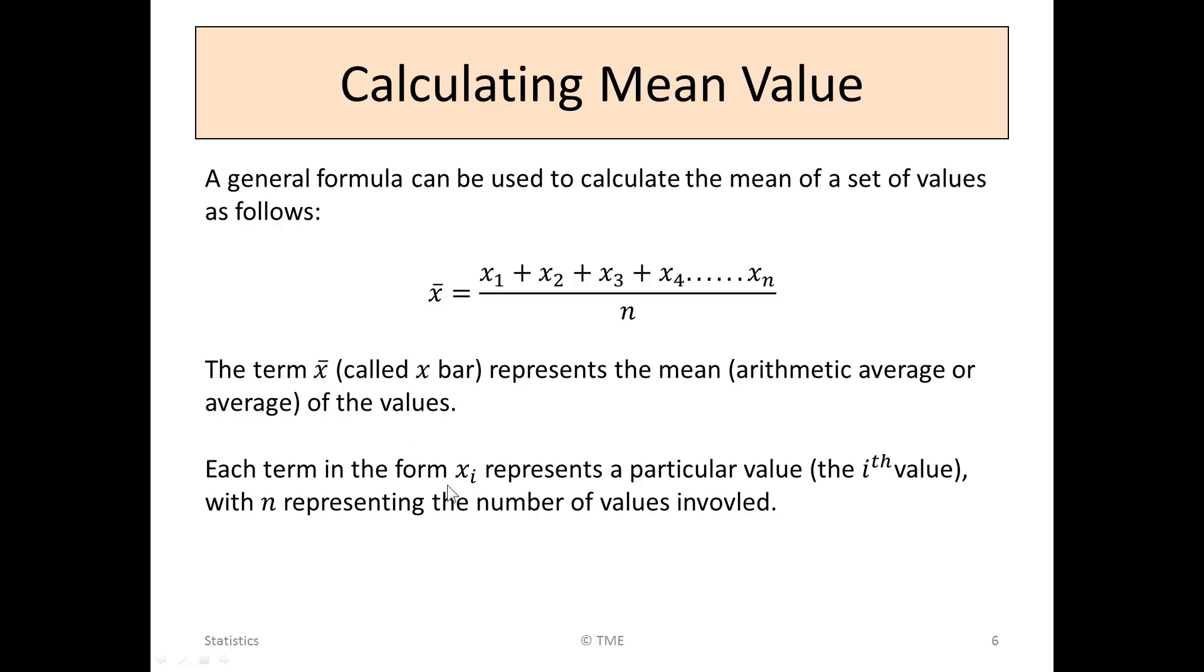Each term in the form xᵢ, x₁, x₂, x₃ represents a particular value, the ith value, for example, the first value, the second value, the third value. With n representing the number of values involved up to the last value, the n values involved.